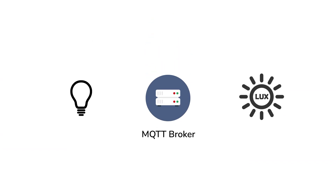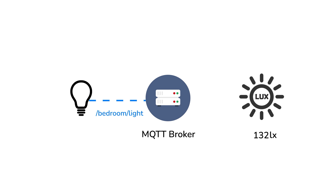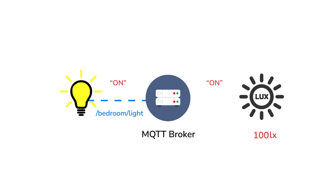For example, we could have two devices: one light sensor and one light bulb. Our light bulb is subscribed to a topic called /bedroom/light, meaning it's sitting there waiting to receive messages. Our light sensor is programmed so that when it falls below a certain light threshold, it will publish an 'on' message to the /bedroom/light topic, where it is picked up by the light bulb and the light bulb will turn on. Clients can be subscribed to and publish to multiple topics simultaneously, and the broker handles all the routing.